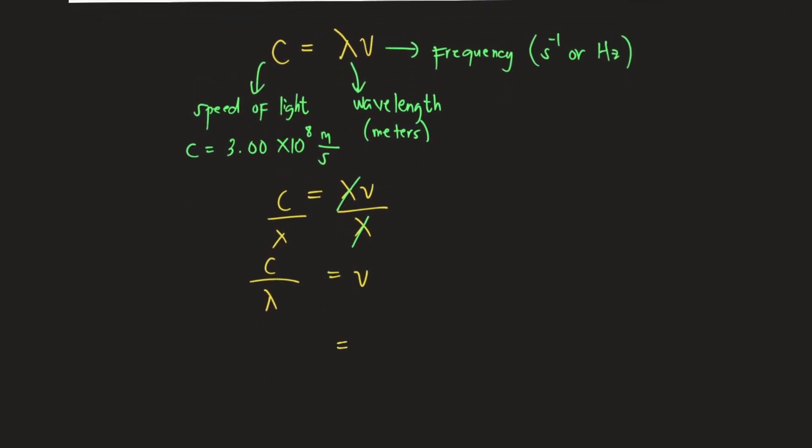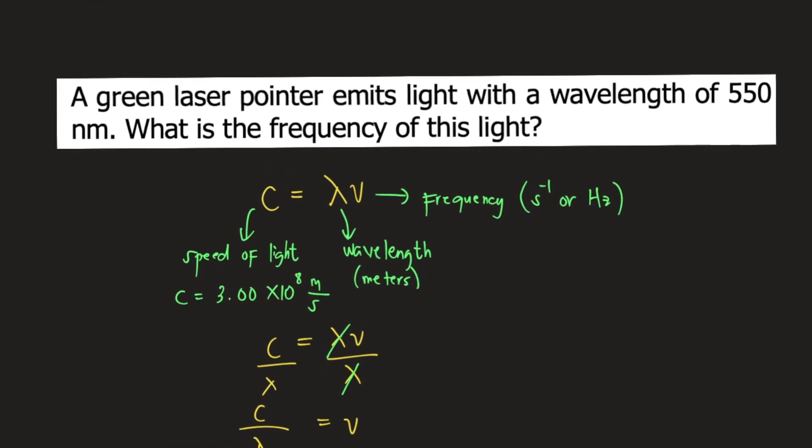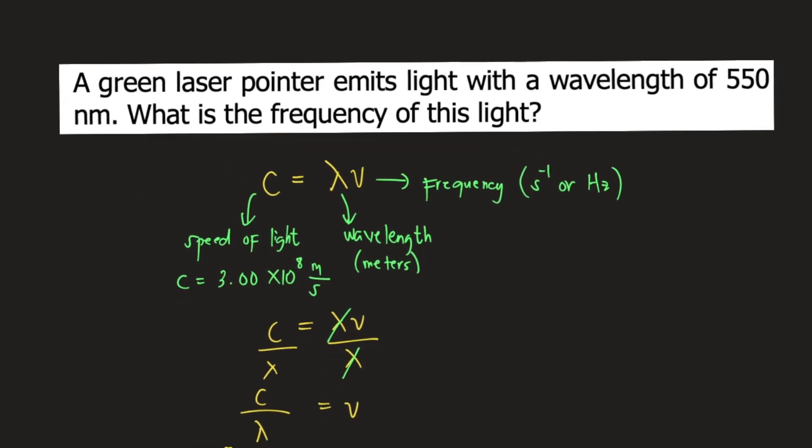Let's substitute the values. C is the speed of light, 3.00 times 10 raised to 8 meters per second. Lambda is the wavelength, which is 550 nanometers.